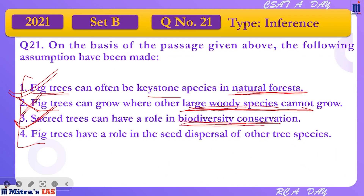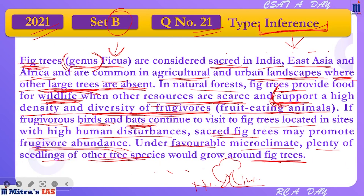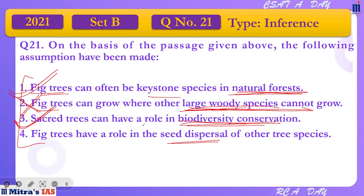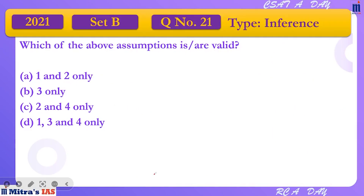Assumption 4: 'Fig trees have a role in seed dispersal of other tree species.' Very evidently the last line says the same thing — other tree species would grow under the fig tree because these birds and bats come and visit, and through them seed dispersal hota hai, and other tree species uske andar payi jaati hain. So we will go by assumptions one, three, and four.